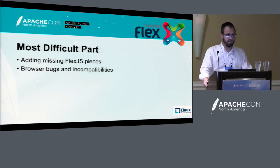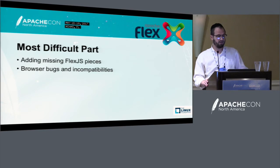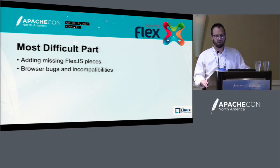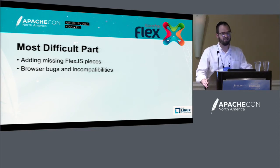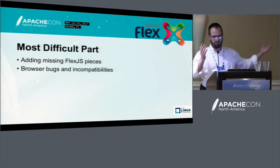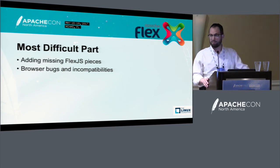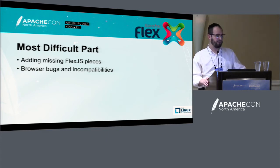What was the hardest part? Number one: FlexJS was missing lots of things. We had a very heavy dependency on SVG, and SVG was kind of shaky — still not what I'd call solid, but less shaky than it was. So we had to implement a lot of that. We had to implement a lot of things that should have worked but didn't. FlexJS is young; the component set is not complete, so we had to fill things in as we went along.